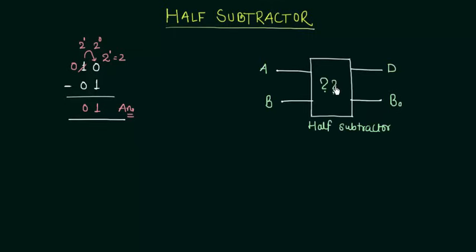Now let's move to the logical expression of this half subtractor. We are having the 2 inputs A, B and the 2 outputs D and B output. And as there are 2 inputs there are 4 possible cases.